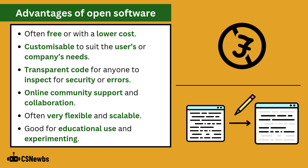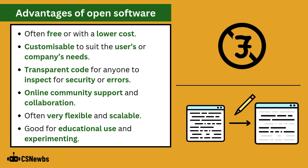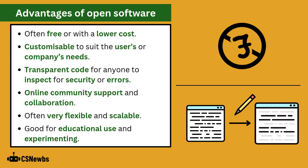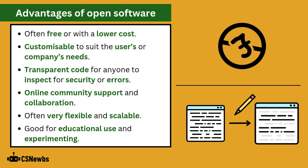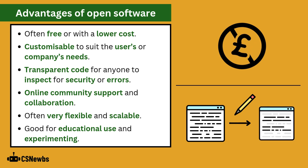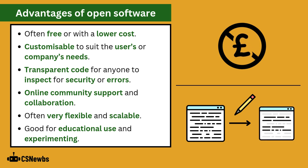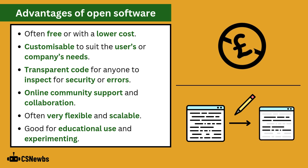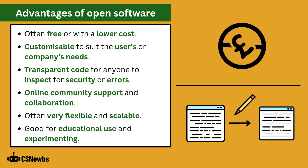Advantages of open software include that it is often free or at least lower cost than closed software. It's customizable to suit the user's or a company's needs. There's transparent code for anyone to inspect for security or errors. Online community support and collaboration is available, and it's often very flexible and scalable in nature, and good for educational use and experimenting.